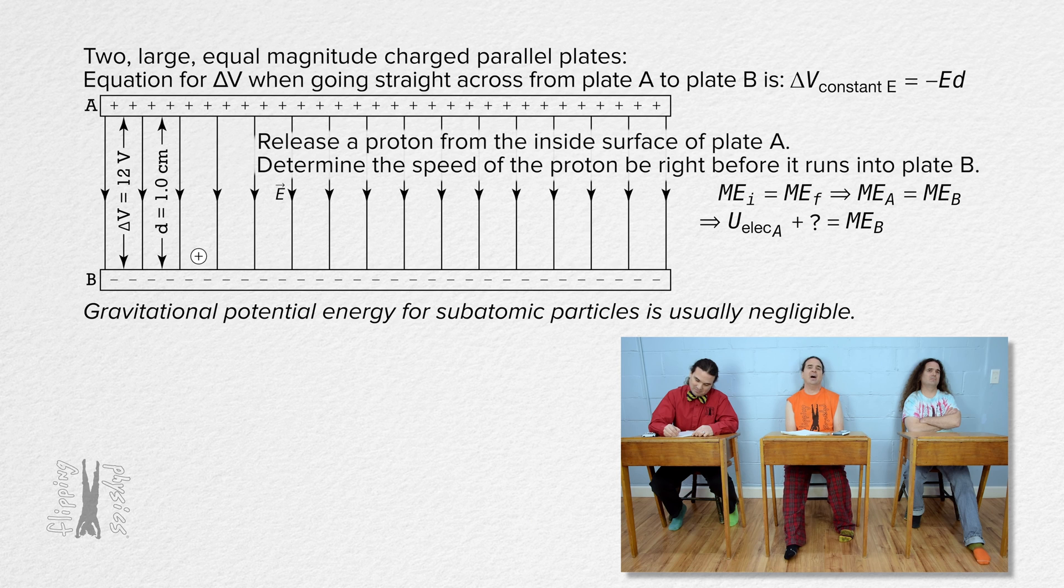So, typically for subatomic particles, gravitational potential energy is negligible and you do not need to identify a horizontal zero line. Sure. So, the only type of mechanical energy the proton has at plate A is electric potential energy.